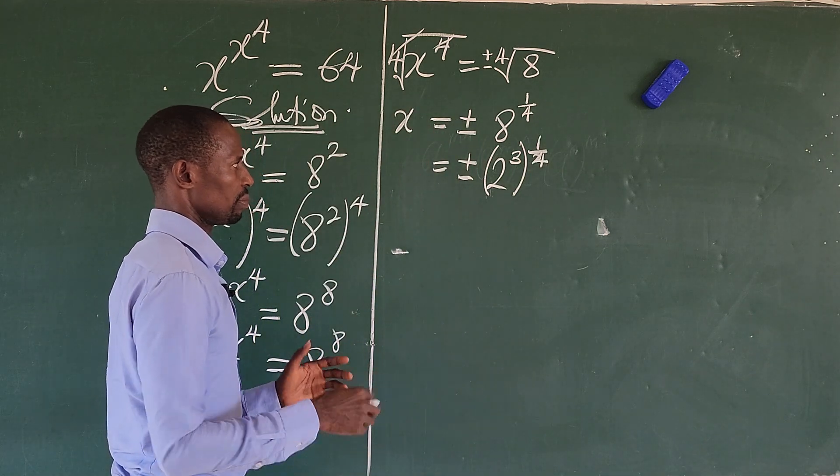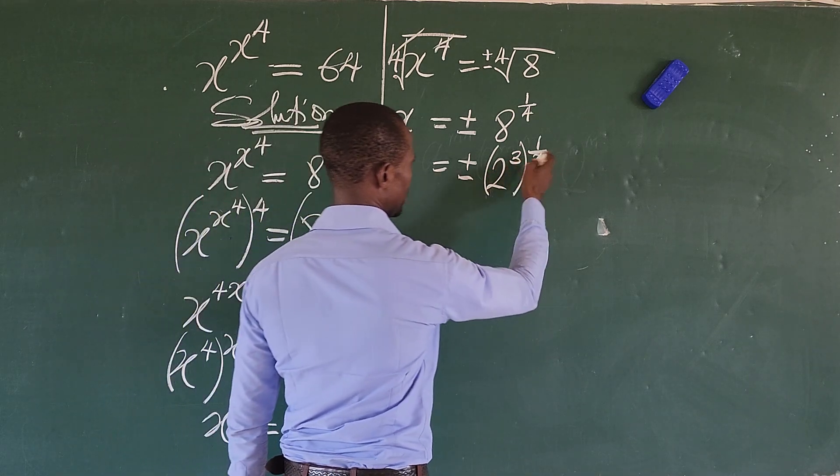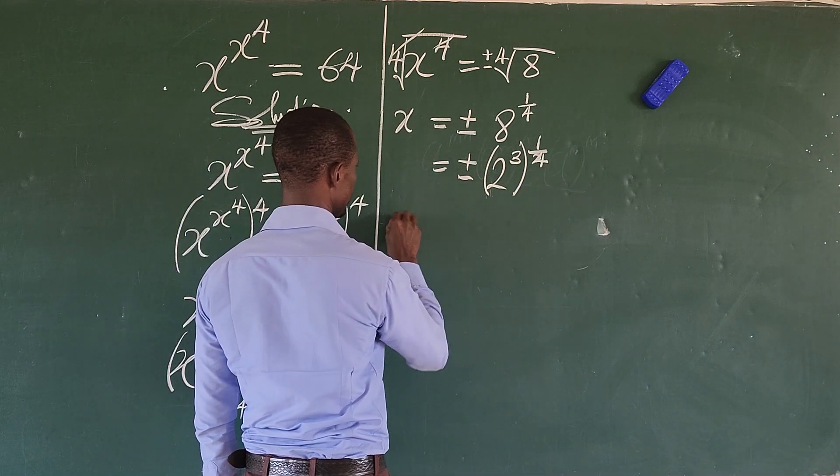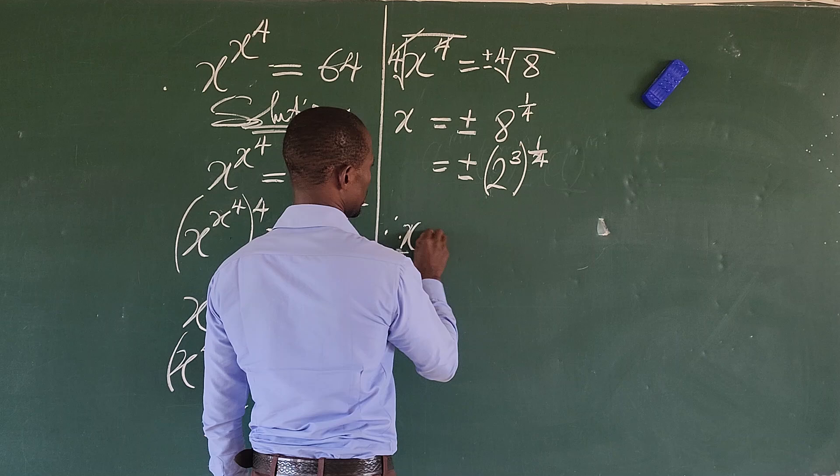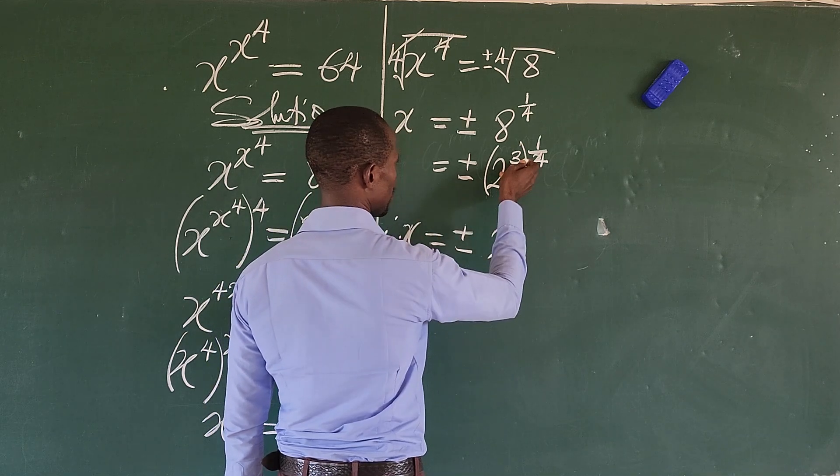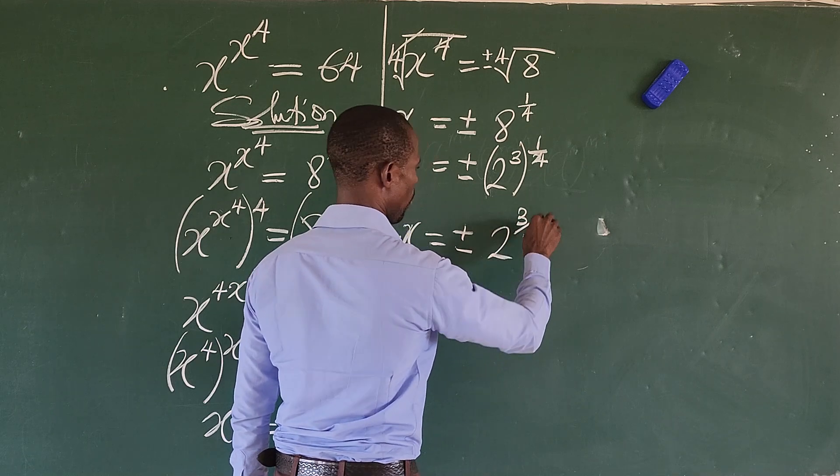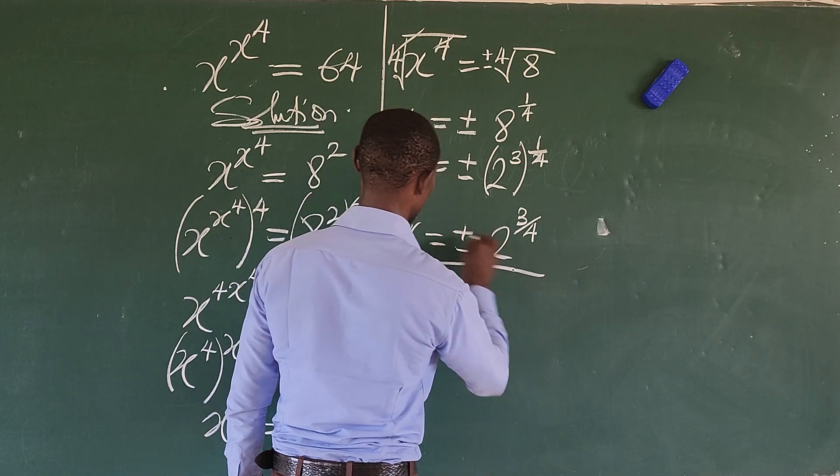Now according to the law we just looked at, which is the power of indices, we can multiply this by this. So we now have therefore our x is equal to plus minus 2. This time these will give us 3 over 4. So this is the value of our x to satisfy the original equation.